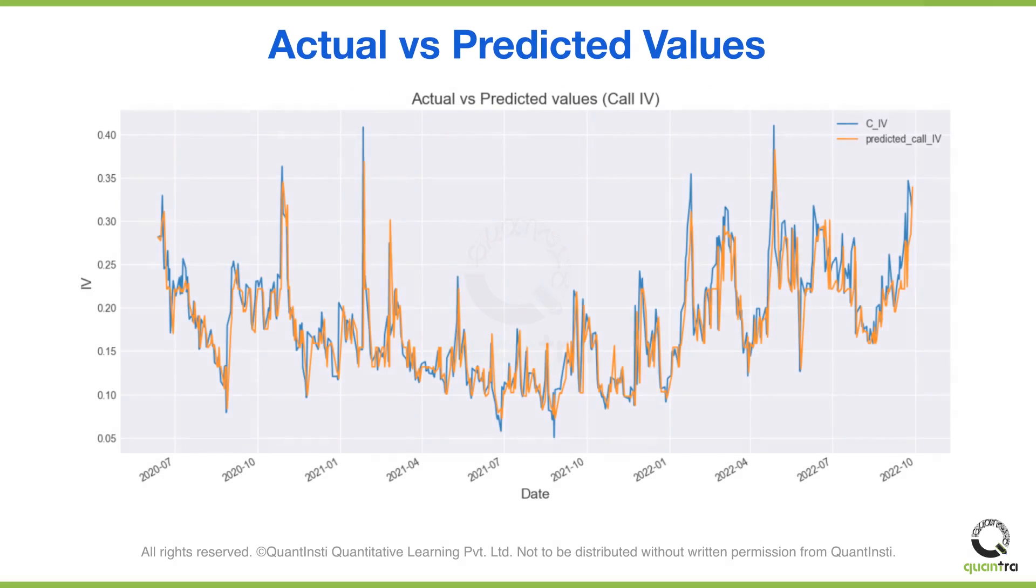We can see that the predicted values are in line with the actual values. We can also see that the ML model lags in spike detection.